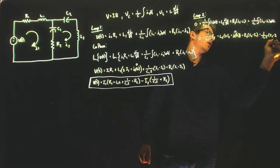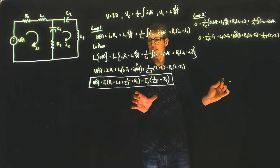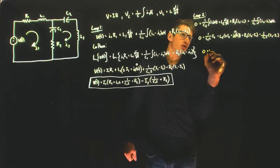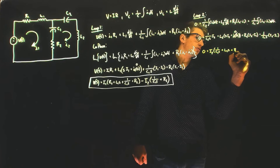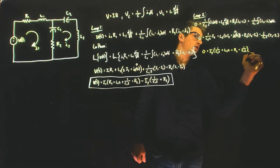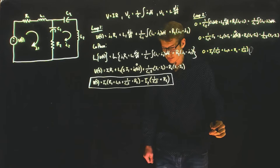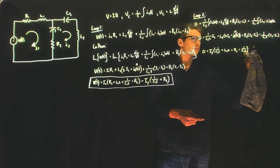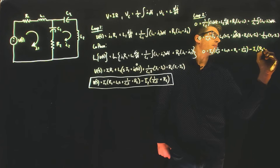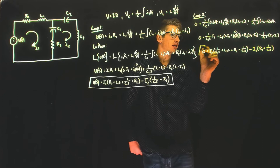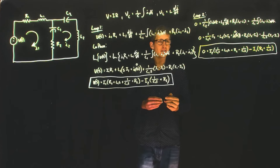Same as we did with loop number 1, we're going to group into like terms. So 0 equals I2 times (1/(C2·S) plus L2·S plus R2 plus 1/(C1·S)) minus I1 times (R2 plus 1/(C1·S)). This is the model of the second loop and the answer to the first tutorial question.